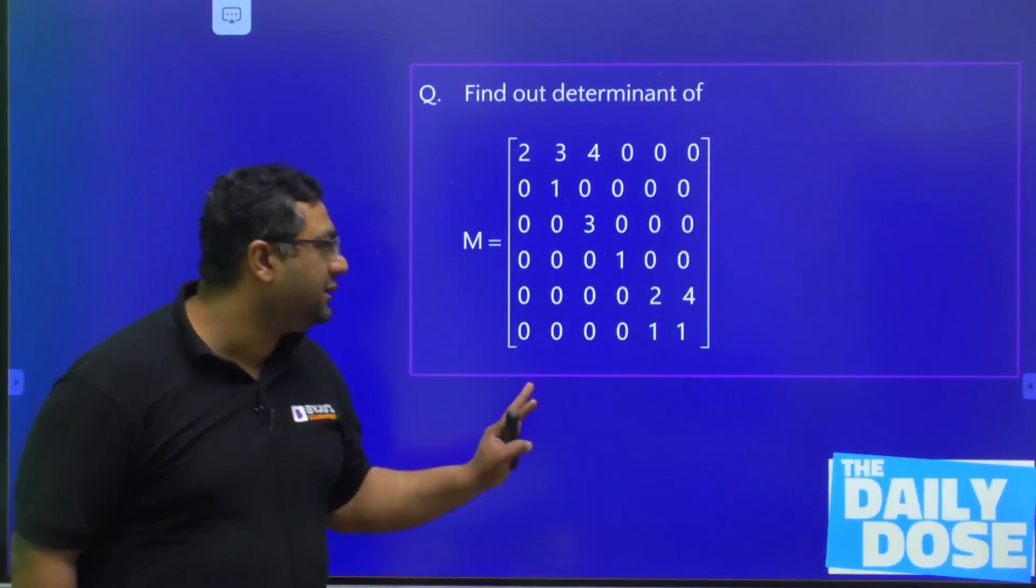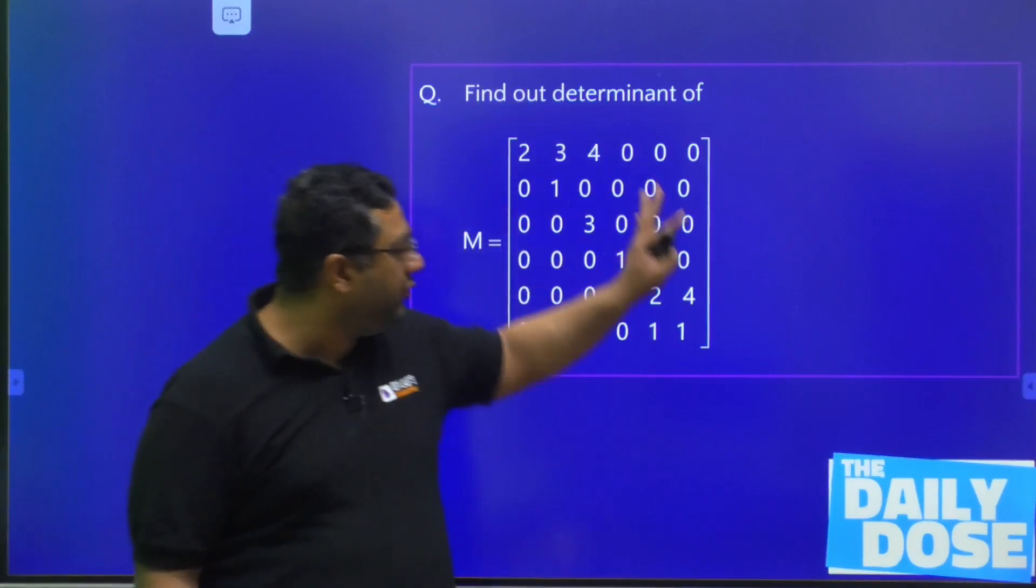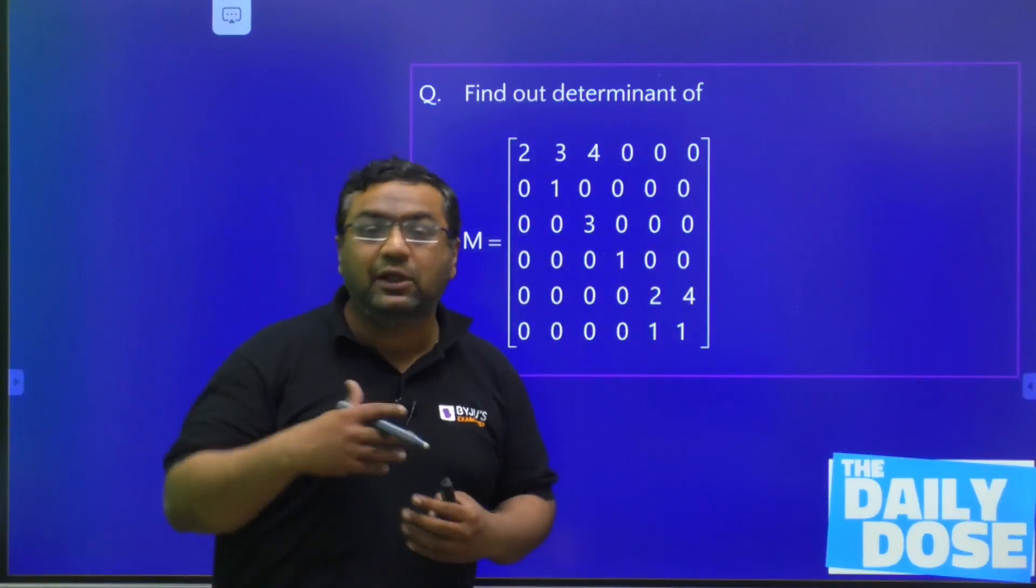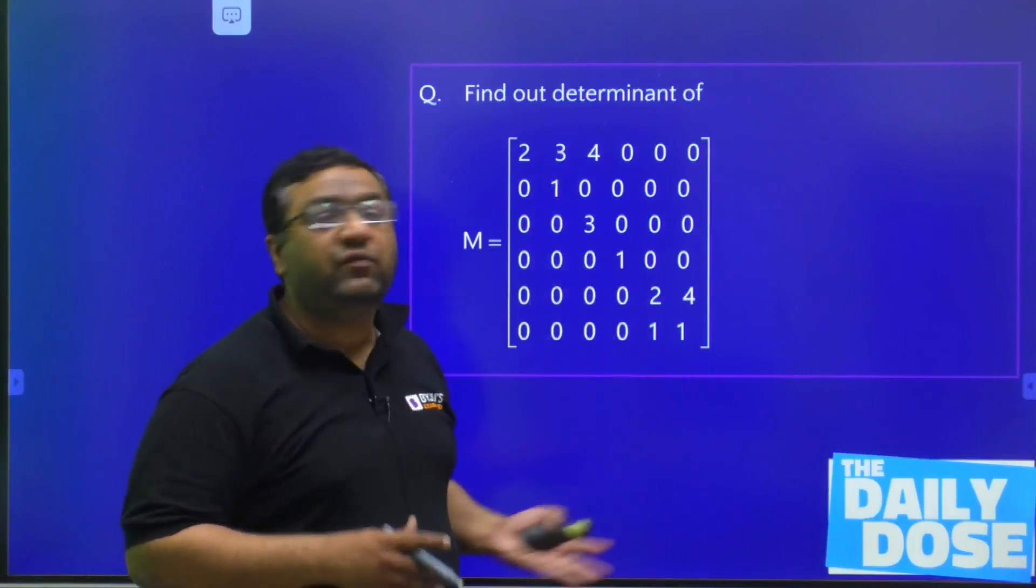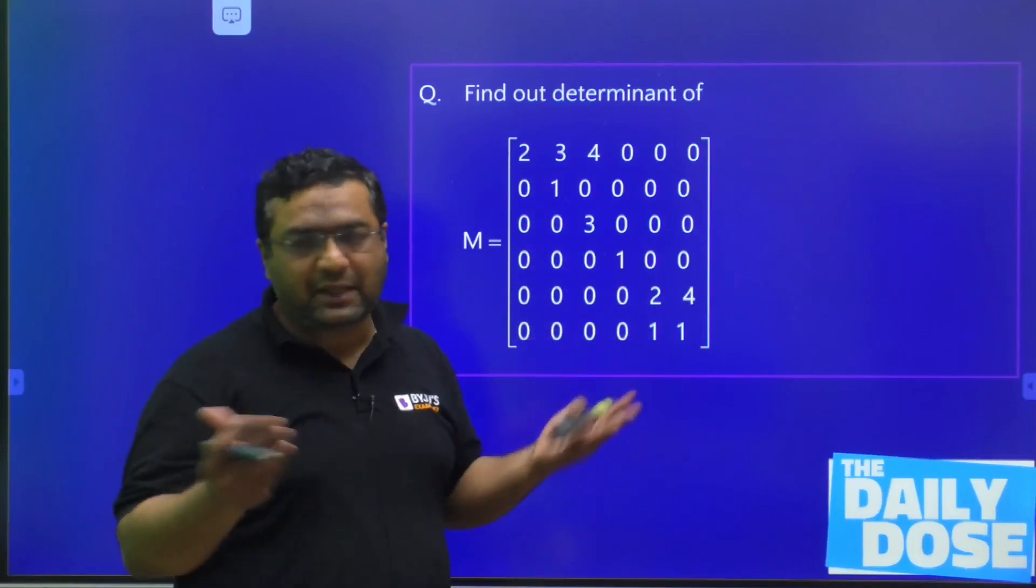So guys, this is a matrix. You can see, whenever you see this type of matrix, generally students get fearful of such a long matrix—how will we find out the determinant? It will be time taking.